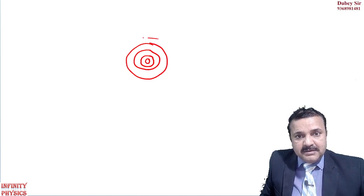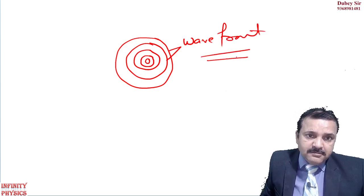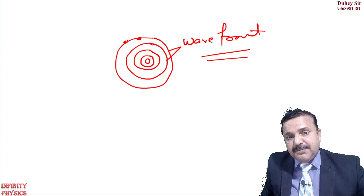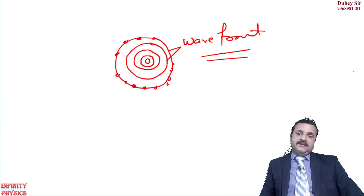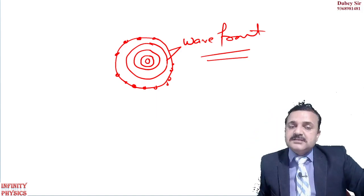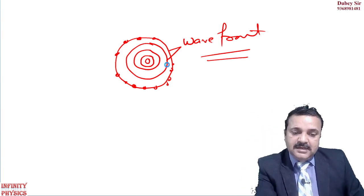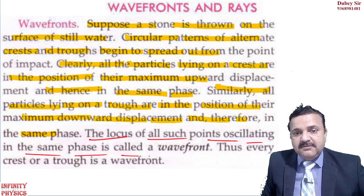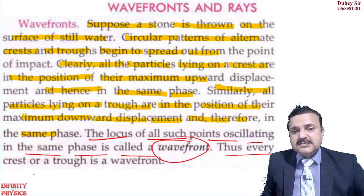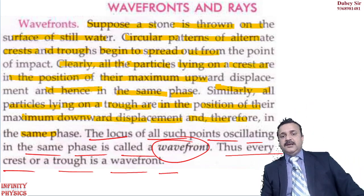This is what we call a wavefront. When you throw a stone in water, a wave forms — that circular wave is the wavefront. The characteristic of this wavefront is that all particles on that crest or trough oscillate in the same phase. So a wavefront is the imaginary surface at which all particles are oscillating in the same phase — that is called the wavefront.